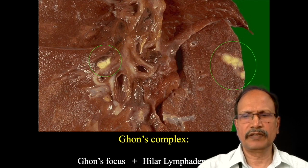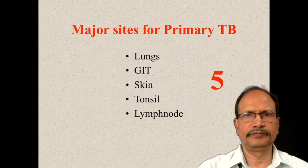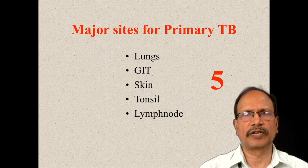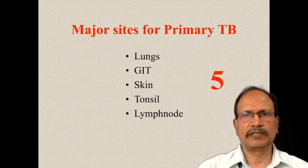A closer view allows you to appreciate the yellowishness of the cut surface, which is due to caseous necrosis. There are five sites where primary tuberculosis can occur: lung, GIT, skin, tonsil, and lymph node. Tuberculosis occurring in other sites of the body is most of the time the secondary variety of tuberculosis.